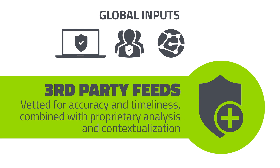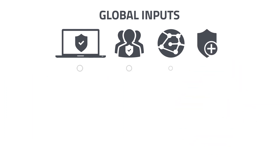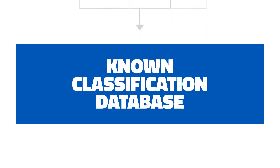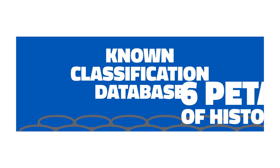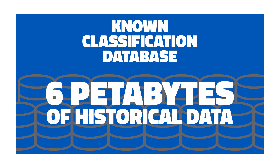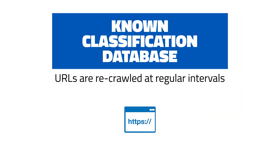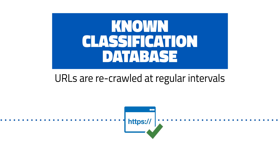That is combined with proprietary analysis and contextualization to make our data actionable. The first stop on our URL classification journey is our known classification database, which contains six petabytes of historical data gathered over a decade. We don't just crawl a URL once — URLs are recrawled at regular intervals to ensure no significant changes have occurred that would change its classification or its reputation score.